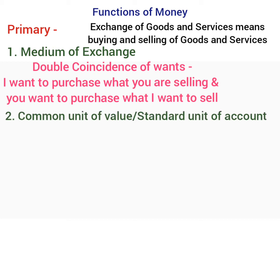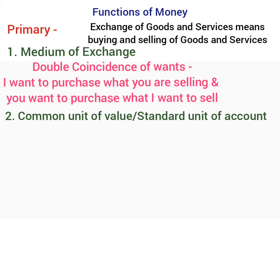The second primary function is Common Unit of Value or Standard Unit of Account. Money is something which is acceptable to all, so it serves as a standard unit of account in which all goods and services can be measured. It provides a common measure of value, enabling both seller and purchaser to make decisions about how much quantity to supply and how much to purchase.